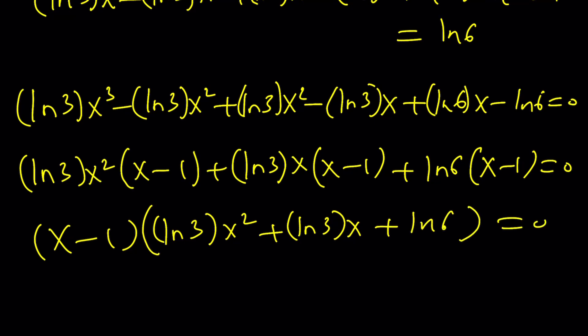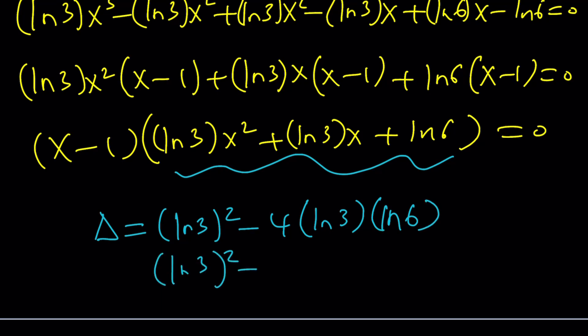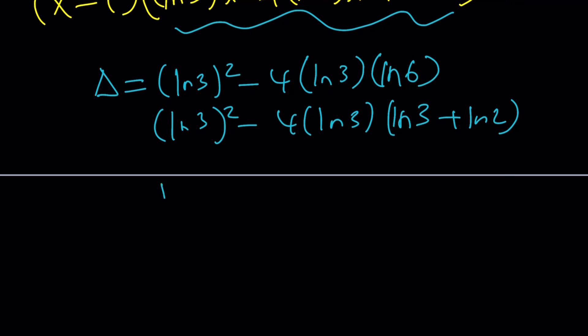Great. So we already know x equals 1. Let's go ahead and focus on this quadratic and how do you solve it. Before you solve the quadratic, you should always look at this discriminant. Discriminant is b squared minus 4ac. But take a look at this. ln 6 can be written as ln 3 plus ln 2, right, from the product rule, and this becomes ln 3 squared minus 4 times ln 3 squared minus 4 times ln 3 times ln 2.